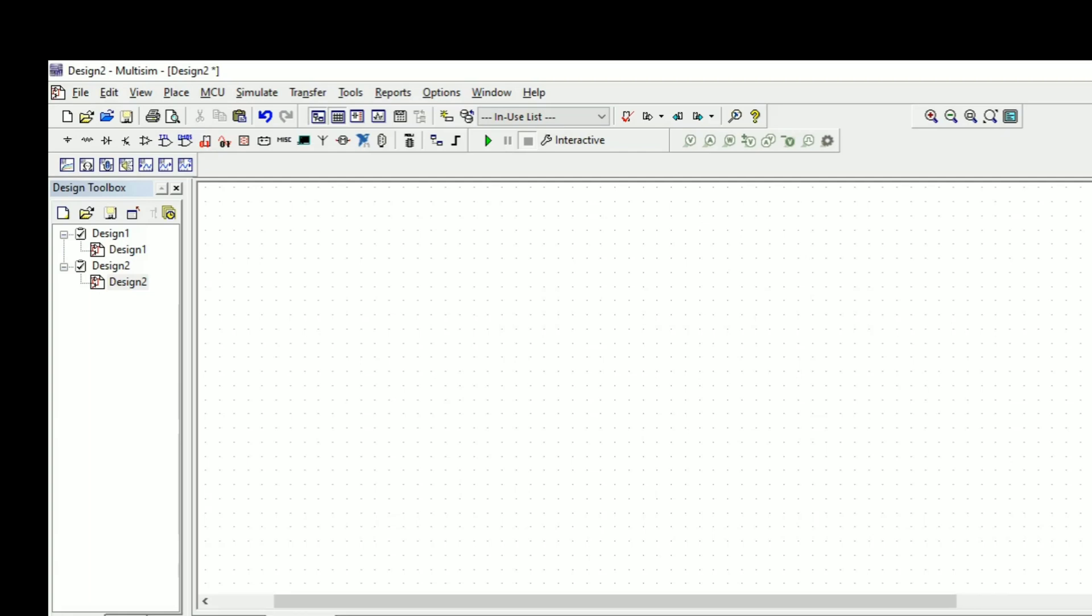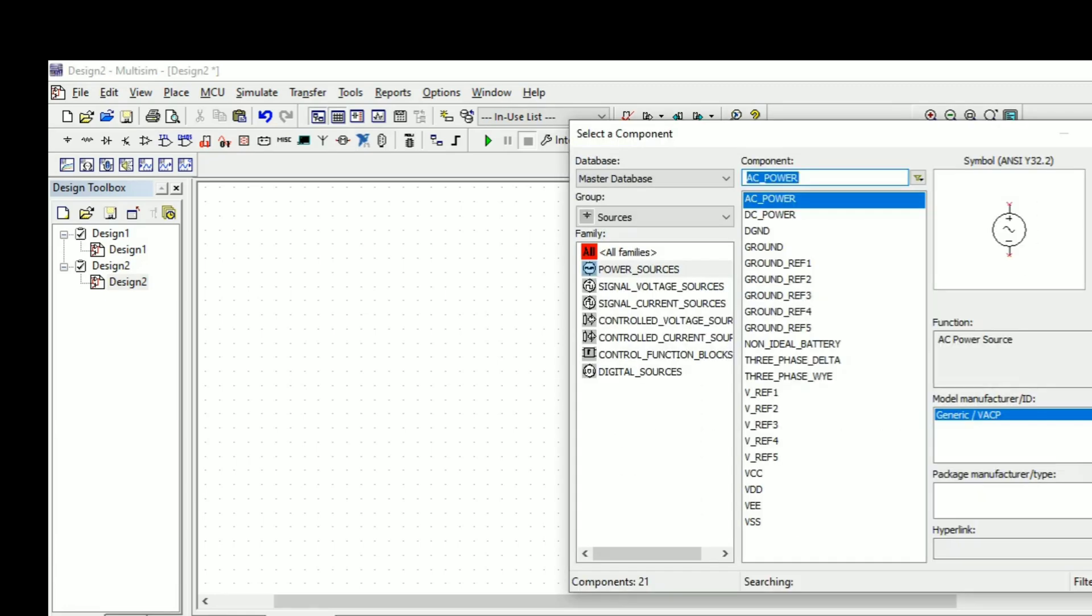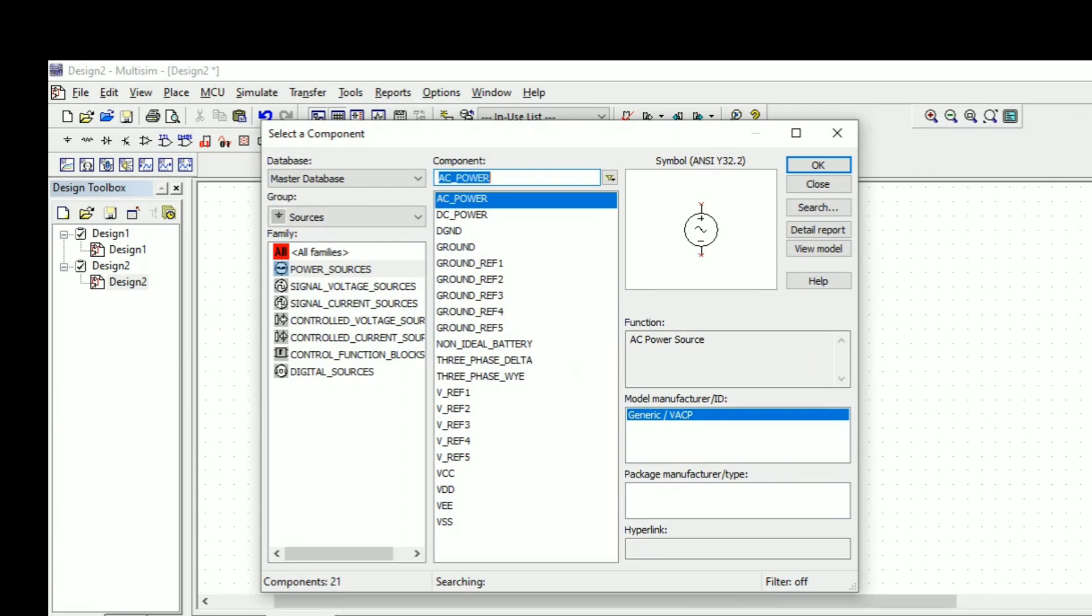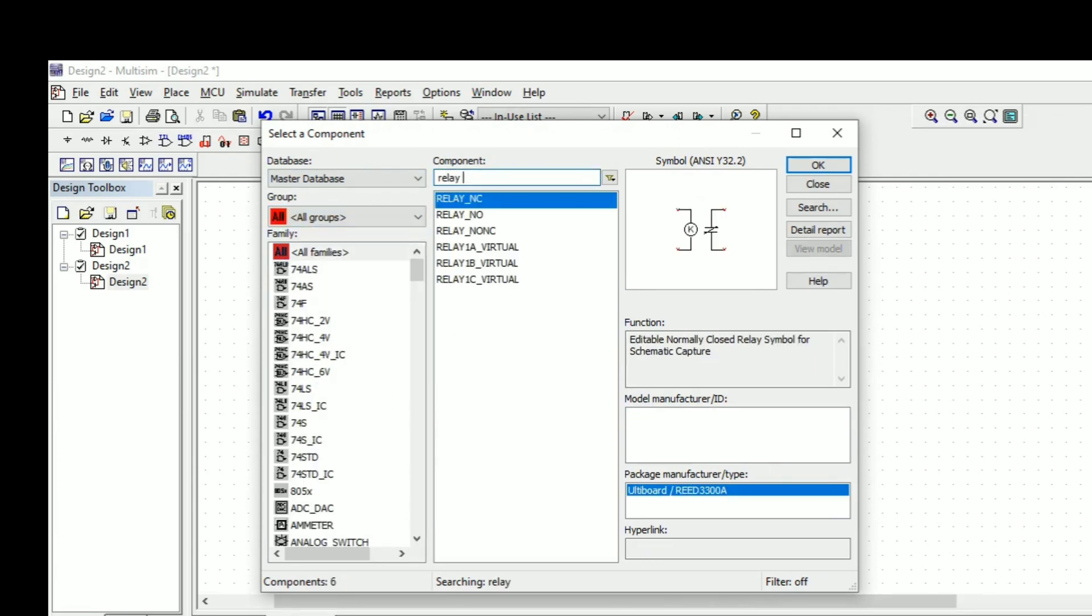In this video we are going to see the working principle of a relay using Multisim software. Initially we will take the component list by pressing Control plus W and we need the relay first.